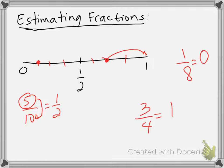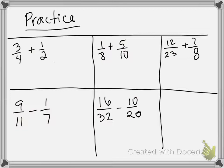So 5/10 is going to be right in the middle, and if it is 1/2 I am going to estimate that number as 1 whole. Now let's look at a practice problem: 3/4 plus 1/2. Using my mental number line, 3/4 estimates to 1, and 1/2 also estimates to 1, so my answer is going to be 2. Then 1/8 is very close to 0, so that's 0, plus 5/10 — since 5 is half of 10, that's 1/2, and 1/2 rounds to 1.